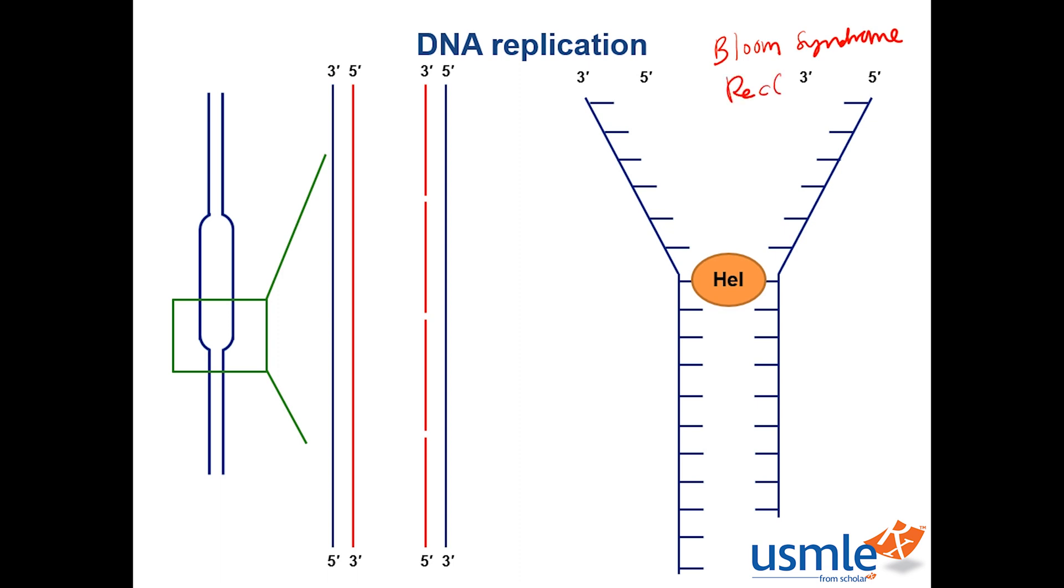It's important in maintaining the stability of the DNA during the replication process. Hyper-recombination occurs, which causes an increase in chromosome breakage and arrangements, leading to increased mutations. The disease is characterized by sun sensitivity, stunted growth, facial telangiectasias, and higher incidence of malignancies.